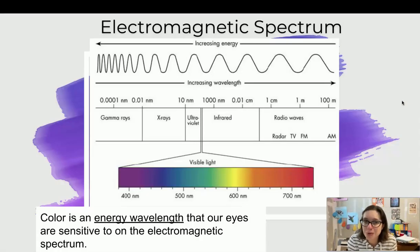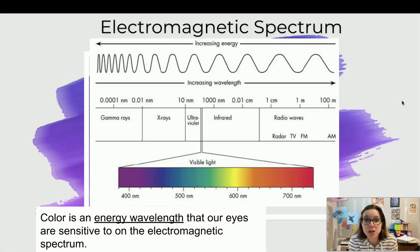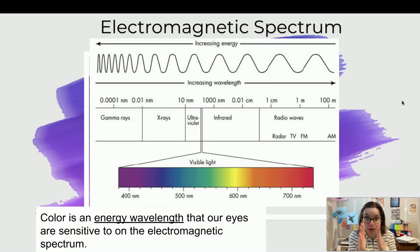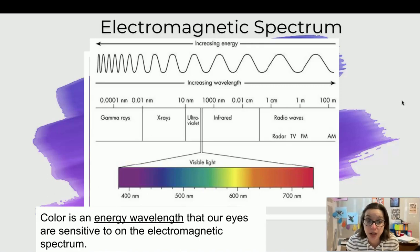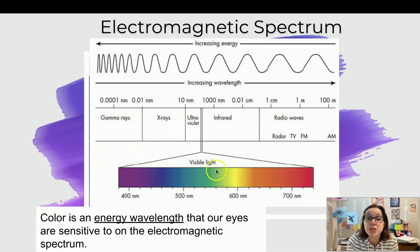Did you know that we have evolved to see color? There's a set of wavelengths called the electromagnetic spectrum, and we can only see the visible wavelength, which is actually a very tiny amount on this spectrum. Color is actually an energy wavelength that our eyes are sensitive to on the electromagnetic scale. We cannot see radio waves, x-rays, or gamma rays — this is all our eyes have evolved to see.